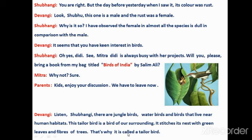The tailor bird stitches its nest with green leaves and fibers of trees. You can see in this picture — that is why it is called a tailor bird. It stitches its nest using green leaves and tree fibers, so it is called a tailor bird — a darzi wali chidiya.